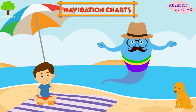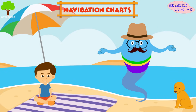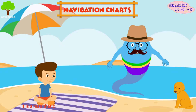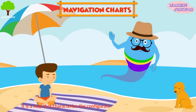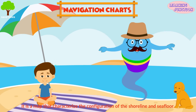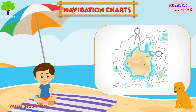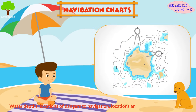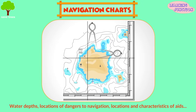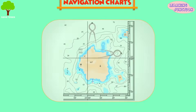Navigation charts or nautical charts — it is a map that characterizes the configuration of the shoreline and seafloor. It gives important information about water depths, locations of dangers to navigation, locations and characteristics of aids to navigation, and many other features.